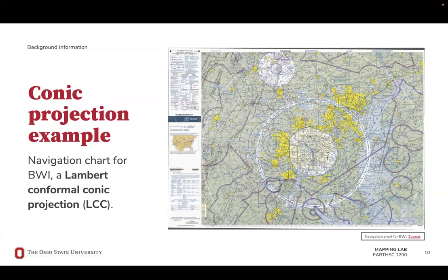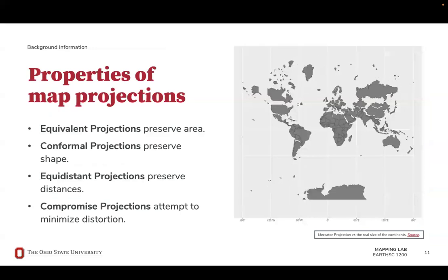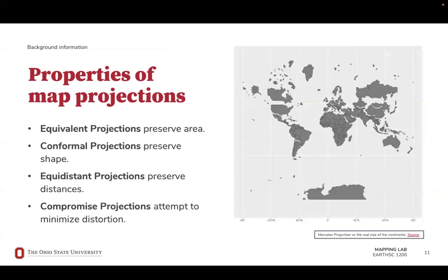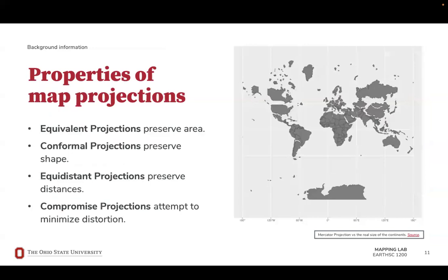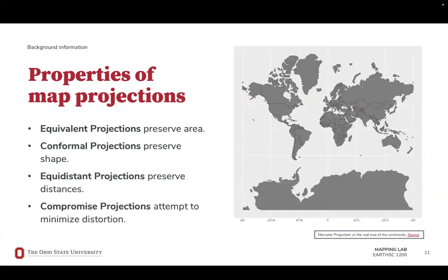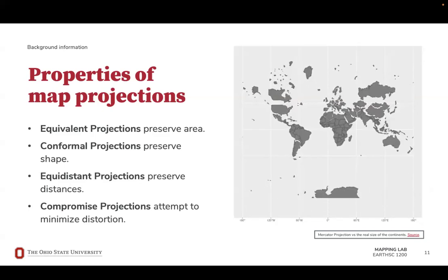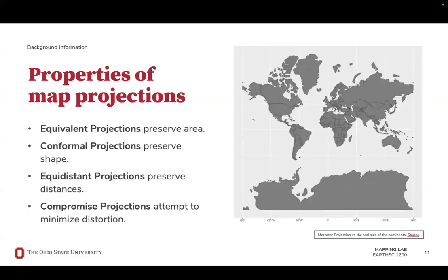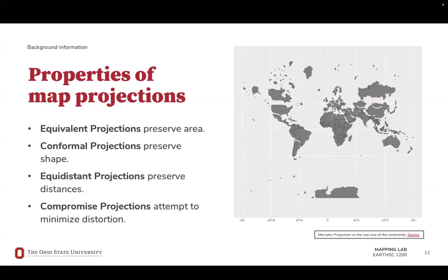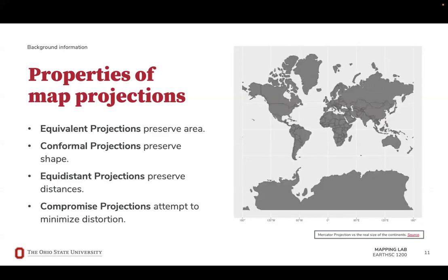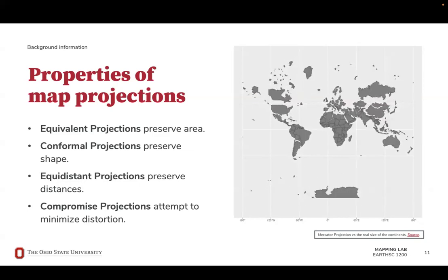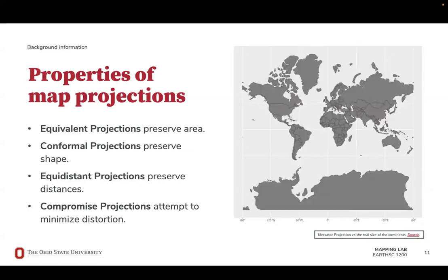Next, we'll talk about what conformal means in this context. There is no one perfect map projection — there will always be a compromise between the properties which are accurately represented on a map. A map projection can only accurately represent one of the following properties at a time. Equivalent projections accurately represent area. We can see that the Mercator projection is not an equivalent projection — it vastly over-represents the size of polar areas.